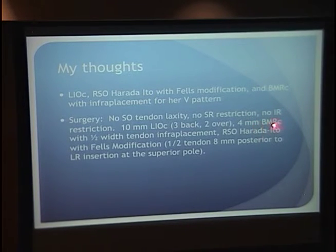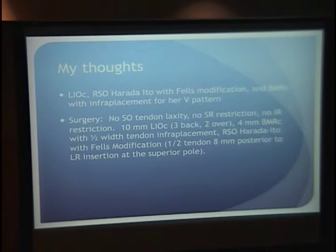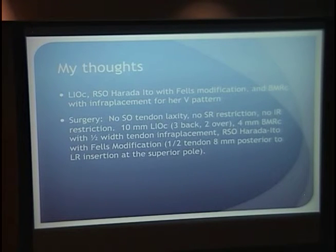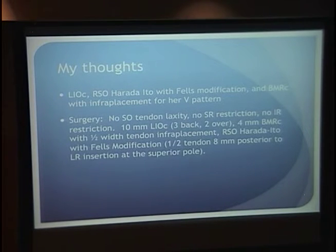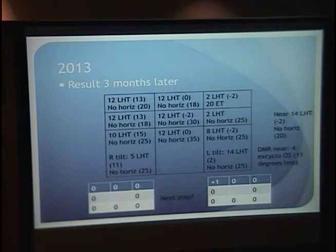I stuck with the original plan: a 10-millimeter inferior oblique recession, a 4-millimeter medial rectus recession both sides with one-half tendon inferior placement, and a right superior oblique Harada-Ito — specifically the Fells modification, because Harada-Ito's original isn't exactly what I did. Fells modified this procedure about 25-30 years ago. It amounts to taking one half to one quarter of the superior oblique tendon and moving it from the back of the eye to the front, making it a better intorter.